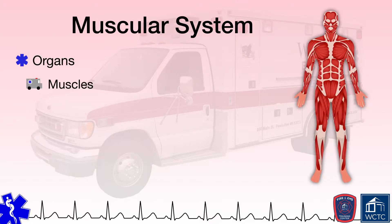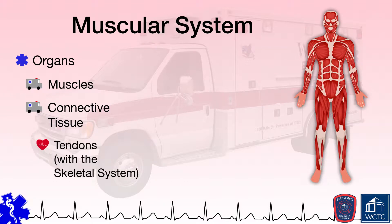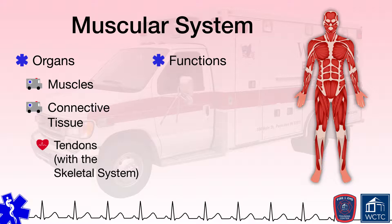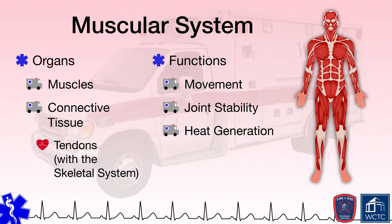The muscular system consists of more than 600 voluntary muscles and connective tissue tendons, which attach muscle to bone, that are responsible for the movement of the body, stability of our joints, and generating heat to keep us warm. We also have numerous involuntary muscles that perform specific functions in other body systems, such as the smooth muscles of the gastrointestinal tract in the digestive system, the diaphragm in the respiratory system, and cardiac muscle within the circulatory system. When we refer to the muscular system in the context of paramedic training, we are referring specifically to voluntary muscles responsible for movement, joint stability, and heat generation.